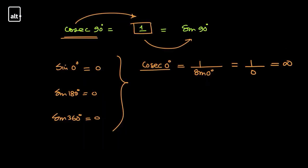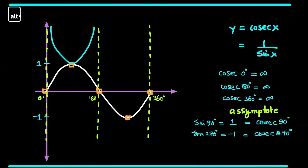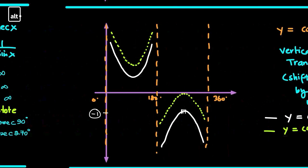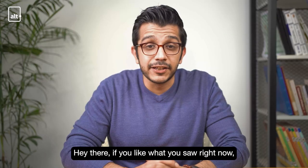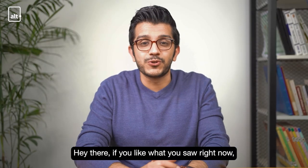That means cosec of zero is infinite. Similarly, the graph of cosec goes like this, and when it is shifted up by one unit it would be touching this particular value.